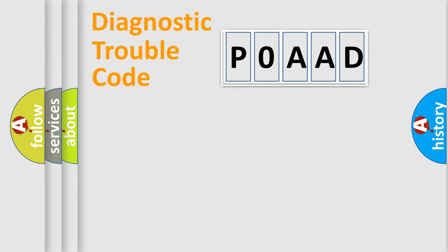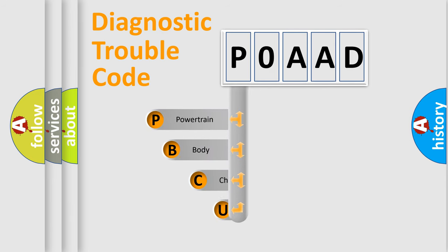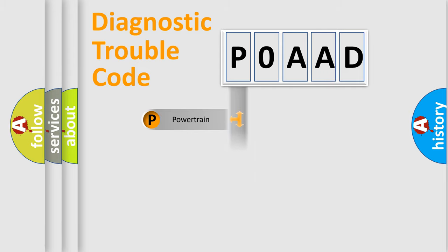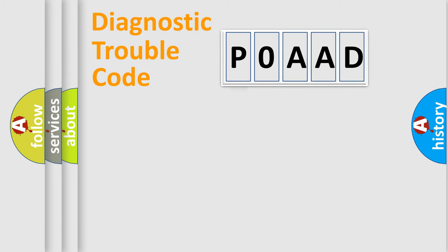First, let's look at the history of diagnostic fault code composition according to the OBD2 protocol, which is unified for all automakers since 2000. We divide the electric system of an automobile into four basic units: Powertrain, Body, Chassis, and Network. This distribution is defined in the first character of the code.